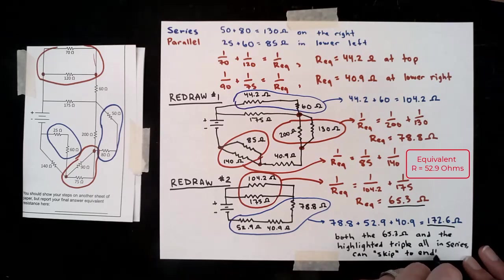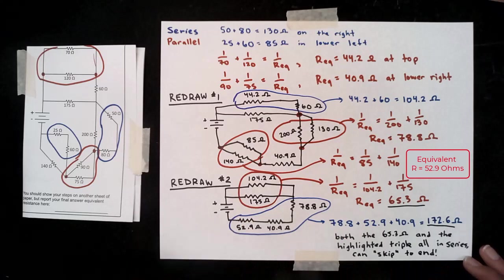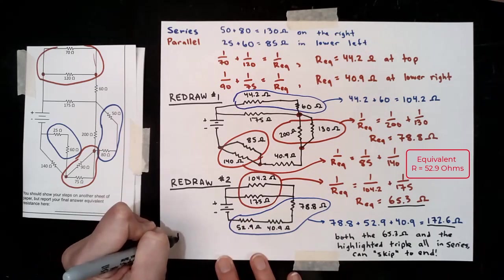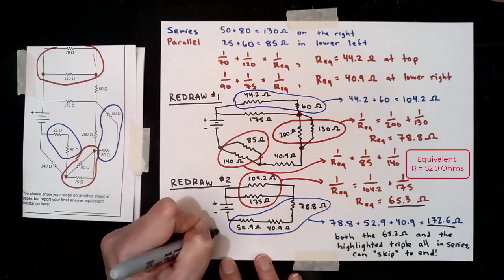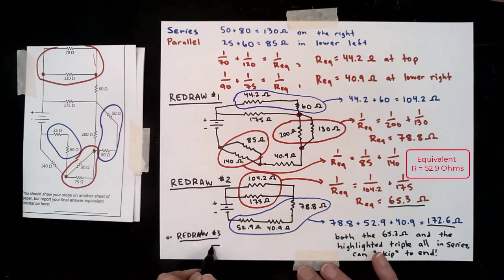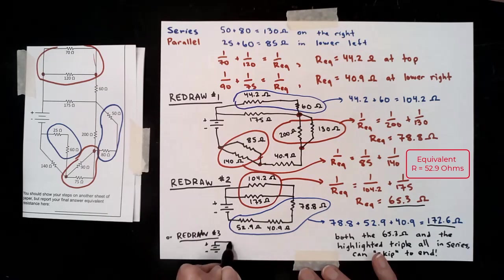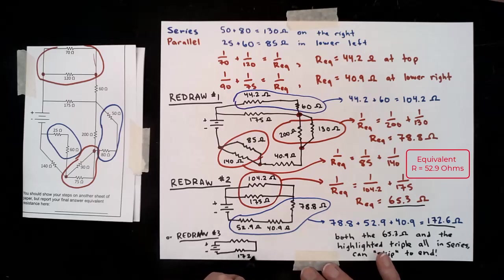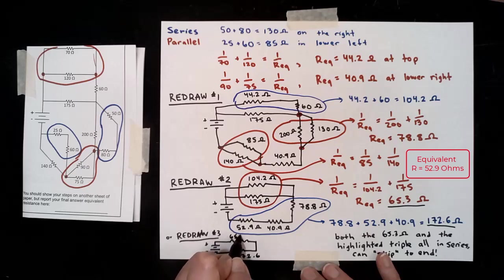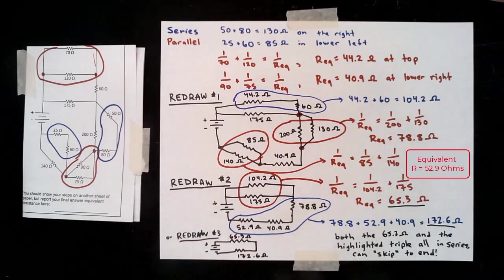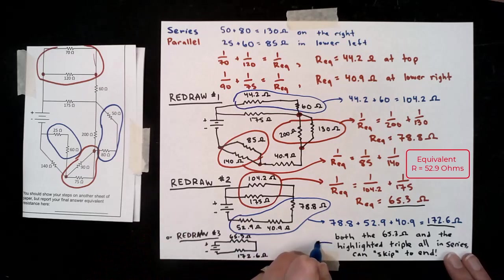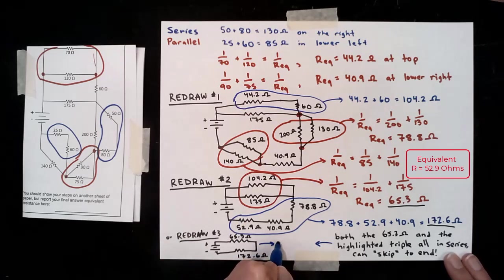So if we were to redraw a third time, if we handled that by looking at what that 65.3 ohms looks like with the 172.6, we'd be able to recognize that those are together. Never forget units. And then those are in series with each other, just like I said. So no matter how we got there, we add those two numbers together, and we get our final result.